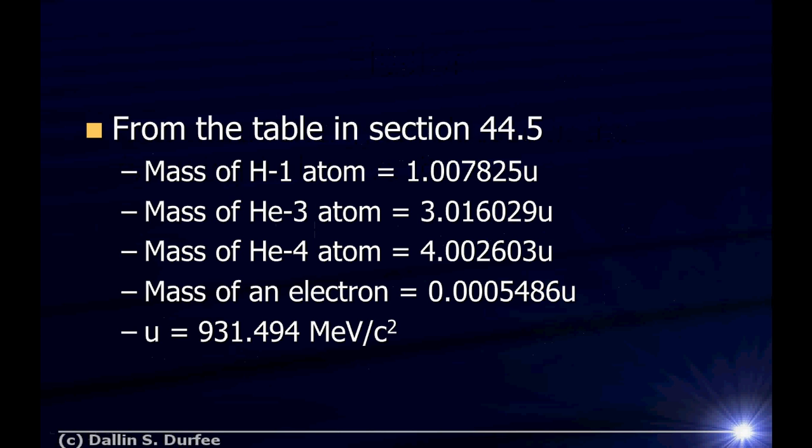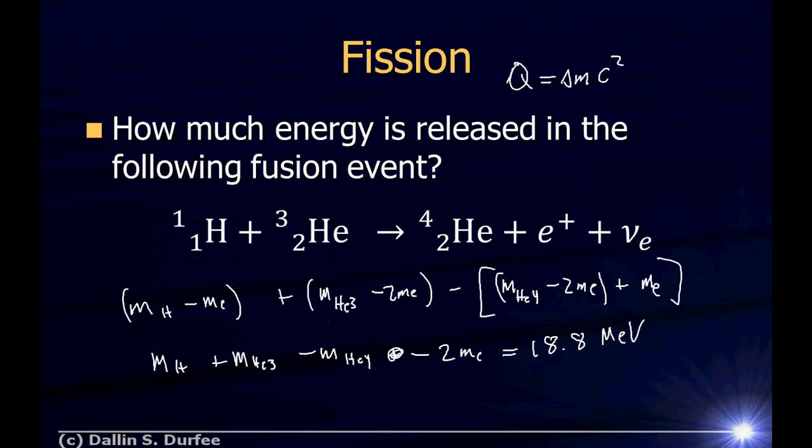That's the end of our problems. I just wanted to point out we got a much higher energy for the fission than we did for fusion. However, the things we started with when we did fusion were much lighter. It turns out typically with fusion you get more energy out per kilogram of fuel than you do with fission, even though you get out typically more energy per event with fission. Good luck with the homework.